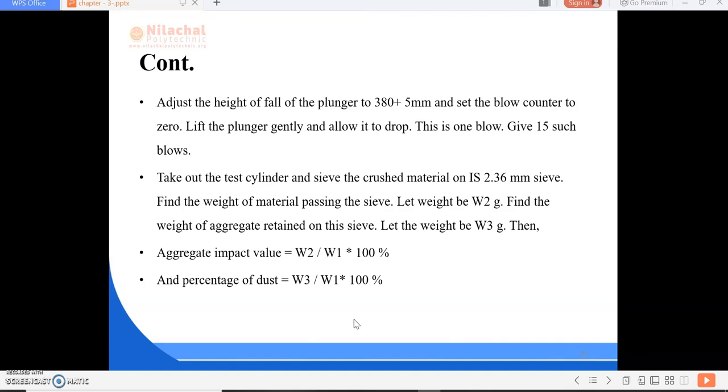Take out the test cylinder and sieve the crushed material on IS 2.36 mm sieve. Find the weight of material passing the sieve, let the weight be W2 grams. Then find the weight of aggregate retained on the sieve, let the weight be W3 grams.